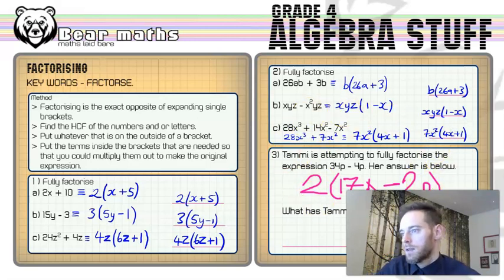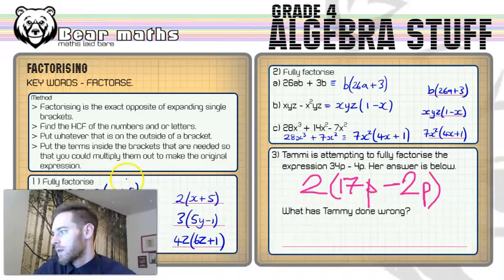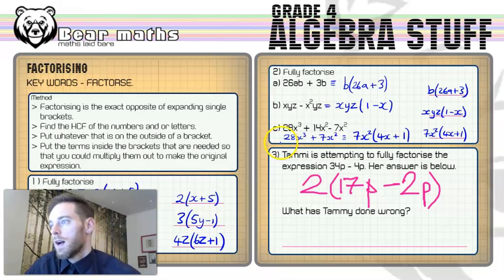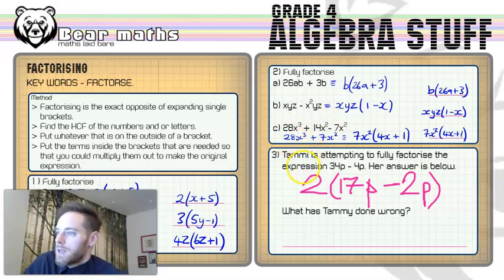Now, the only thing that remains here in this video of factorizing is question three. I've got Tammy. Tammy is attempting to fully factorize the expression 34p - 4p. Her answer below is 2 open bracket 17p minus 2p. What has Tammy done wrong?